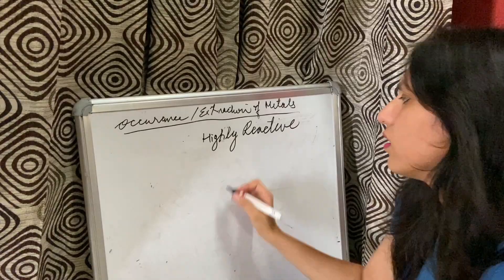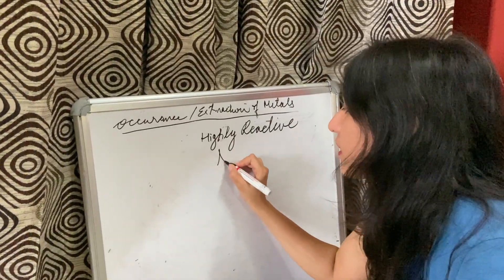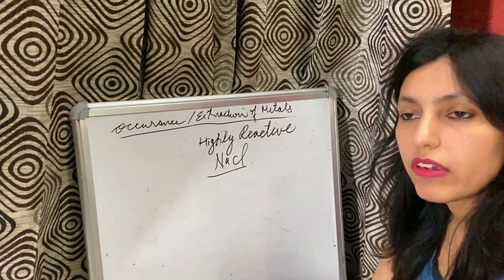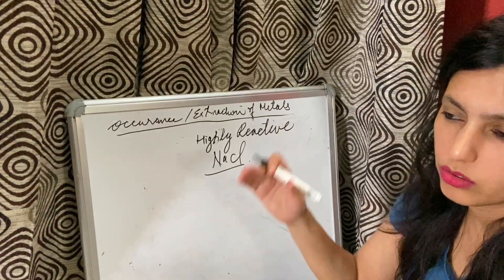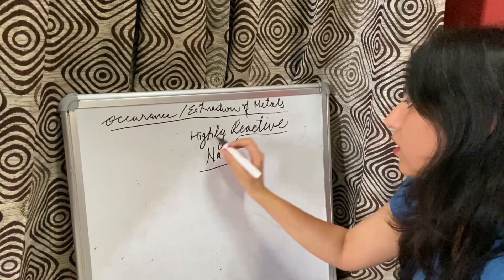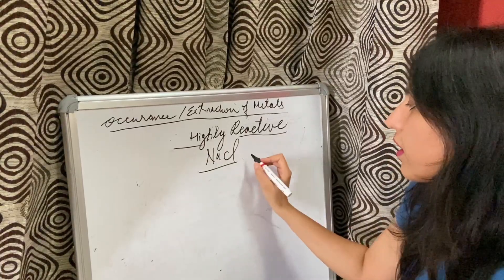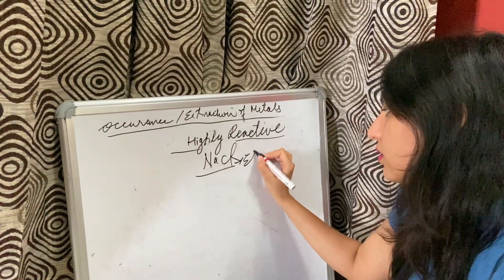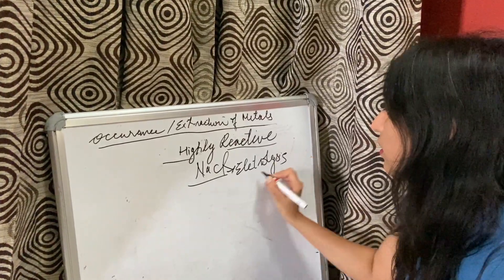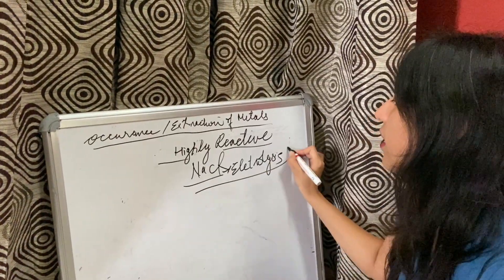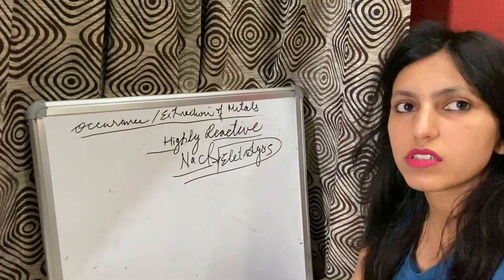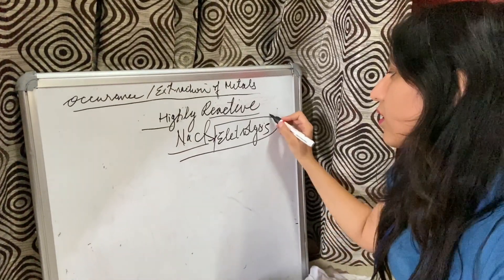Now we will study about the highly reactive metals, for example sodium (Na). For highly reactive metals we don't have as many processes — there is only one process, and that is electrolysis.